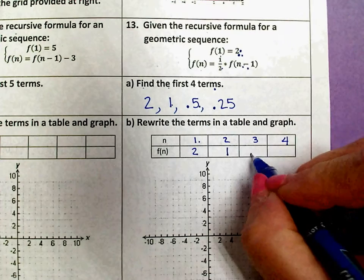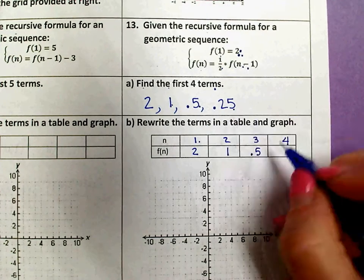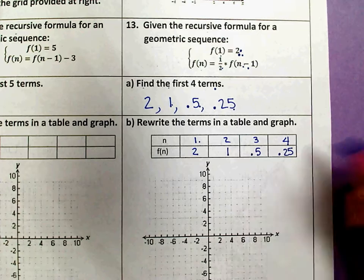When x is 3, y is 0.5. And finally when x is 4, y is 0.25.